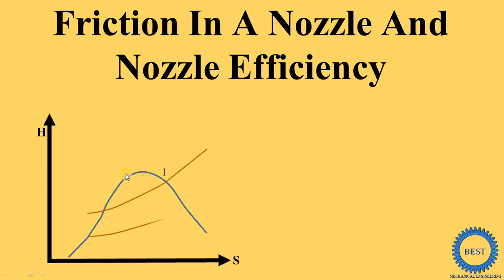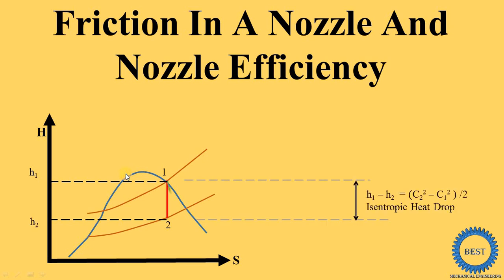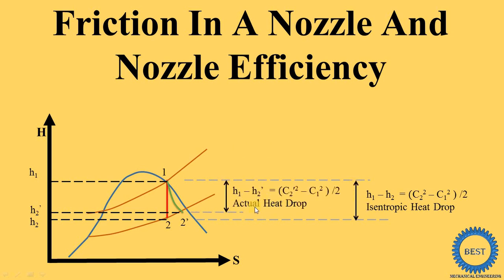In this video I explain friction in a nozzle and nozzle efficiency. For finding nozzle efficiency we require two parameters: the isentropic heat drop and the actual heat drop. First we understand friction in nozzles and draw the Mollier diagram for friction in nozzles. Using this diagram we derive the equation of nozzle efficiency, meaning these two parameters are related — if we know the friction in nozzles then we can easily understand the nozzle efficiency.